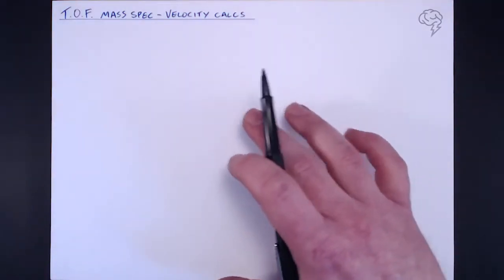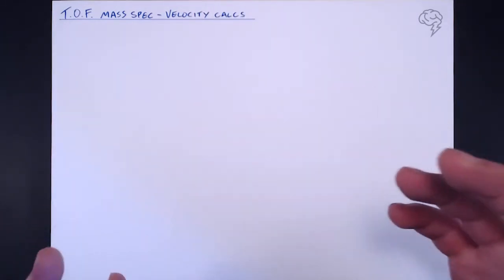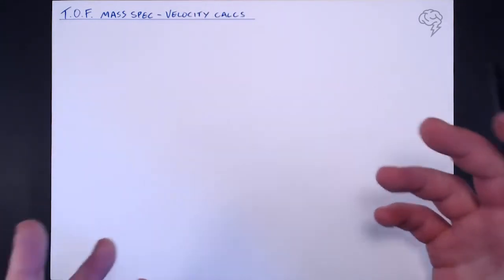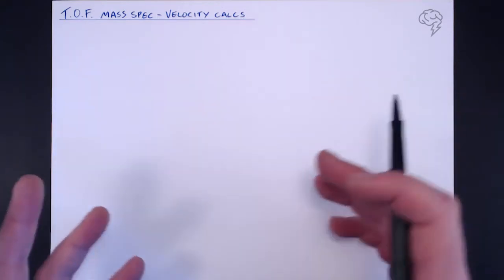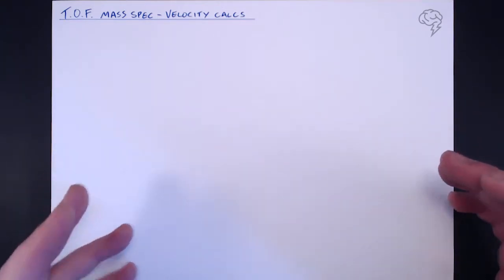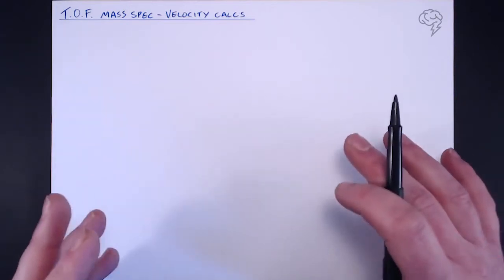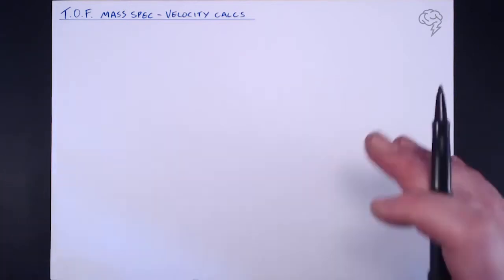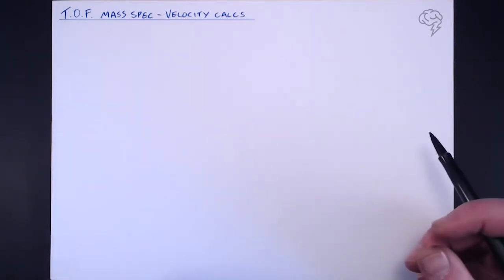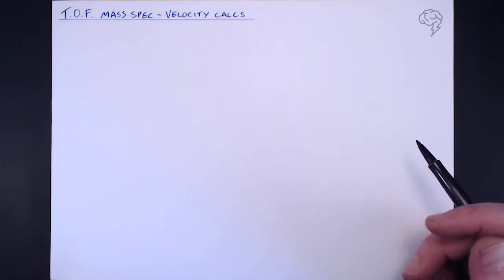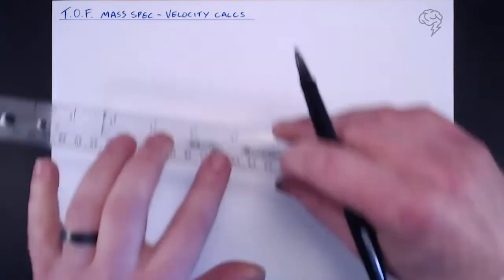In this tutorial we're going to be looking at the time-of-flight mass spectrometer, specifically the calculations that involve the velocity of the ions traveling through it. We're not going to go through the inner workings, but we are going to look at the calculations they can give you with respect to the time-of-flight mass spectrometer. A little bit of background information first.